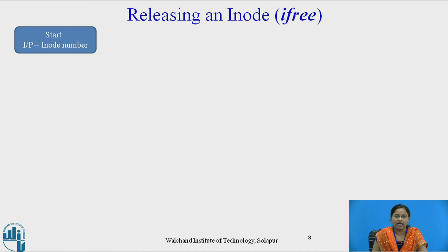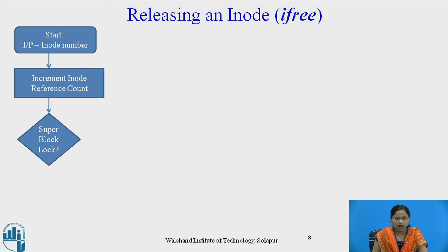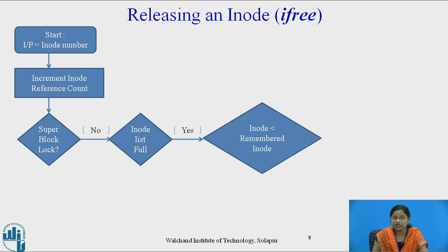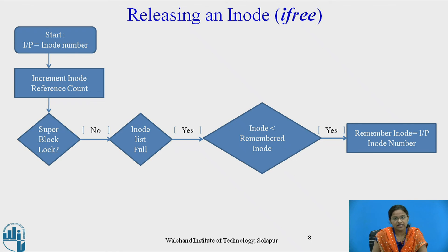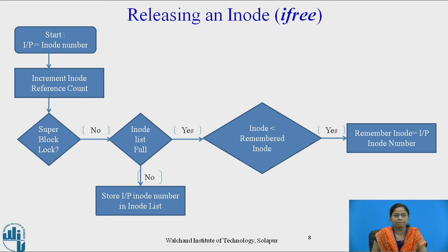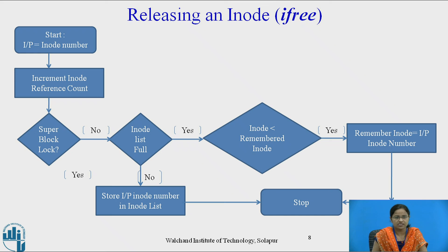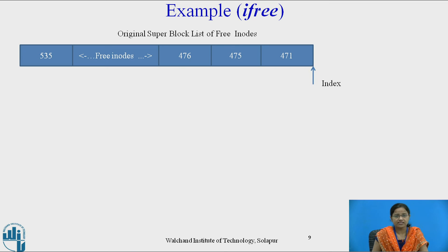Now let us see releasing an iNode using algorithm iFree. The input to this algorithm is the iNode number, which increments the iNode reference count. Then it checks whether the super block is locked by some other process. If it is not locked, it checks whether the iNode list is full. If the iNode list on the super block is full, it checks whether the free iNode is less than the remembered iNode. If it is less than the remembered iNode, it removes the remembered iNode from the super block list and marks the free iNode as the new remembered iNode. But if the super block list is not full, meaning there is space on the super block array, the free iNode number is stored into the iNode list. If the super block is locked, it just returns.